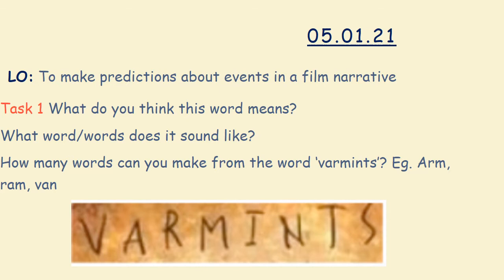What do you think the word varmints means? What word or words does it sound like? How many words can you make from the word varmints? You can only use the letters in the word once. So if I use the A, the R and the M, I can spell arm. If I use the R, the A and the M, I can spell ram. If I use the V, the A and the M, I can spell van. Pause this PowerPoint for three or four minutes and see how many other words you can make from the word varmints.